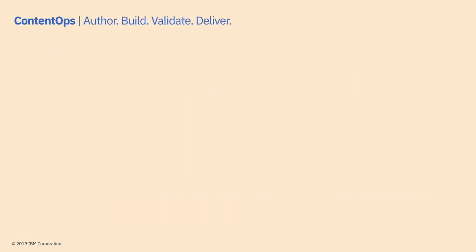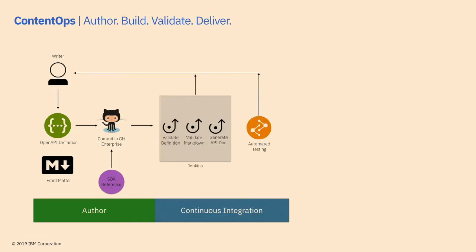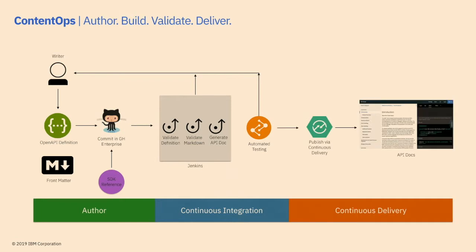Similar to DevOps, we have content ops — we want to deliver content in an automated way. That same OpenAPI definition file is used. The SDK reference information generated from the previous build, plus the front matter information we're writing for non-method extra content, get merged into a GitHub environment. From there, we do continuous integration: it automatically kicks off the build, validates the definition, validates the Markdown with test cases, merges those things together to create a generated API doc, runs automated testing, and then publishes through a continuous process into our API docs environment.